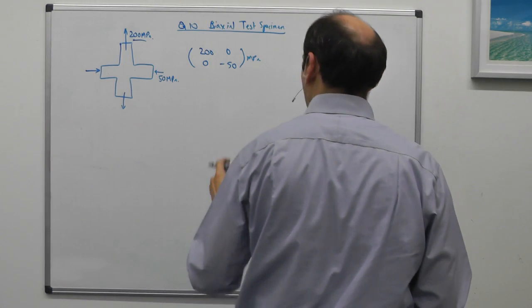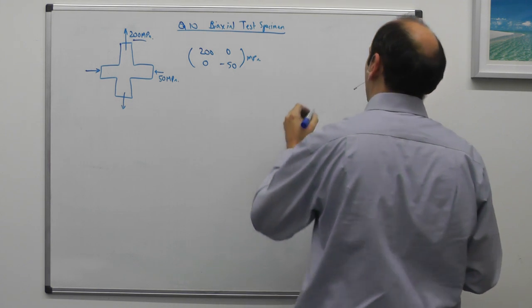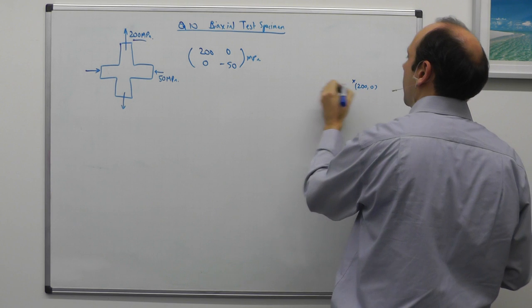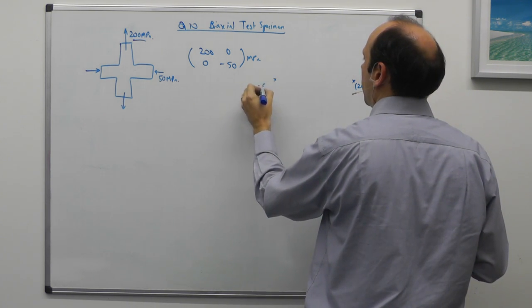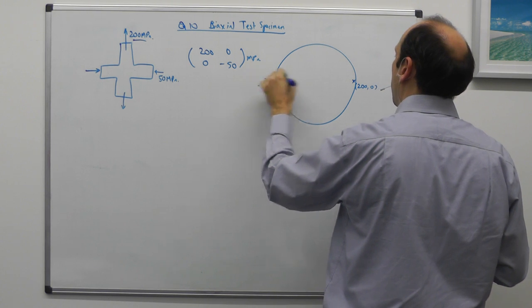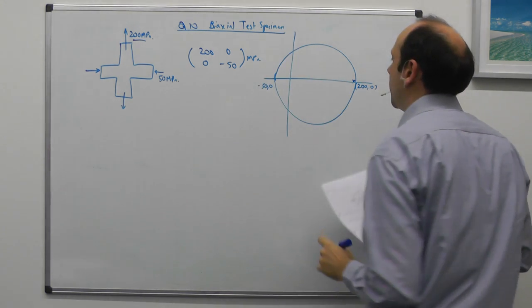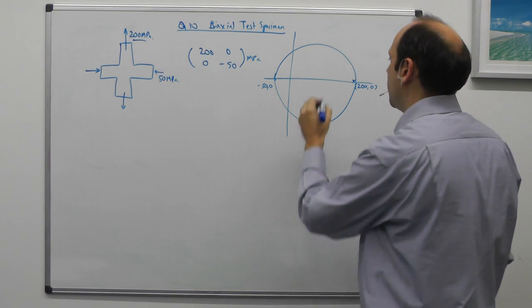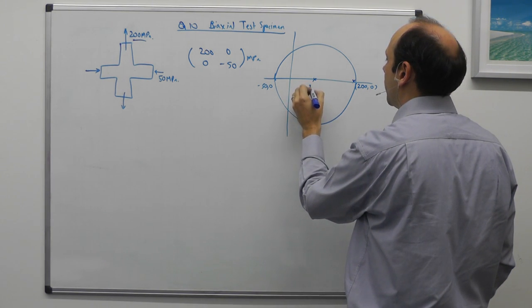Let's get going. So we want a Mohr's circle that goes between 200 comma 0 and minus 50 comma 0. So we've got a Mohr's circle like that. Our vertical axis is going to be somewhere in here. The average of 200 minus 50 is 150 divided by 2 is 75. So the middle's here at 75.